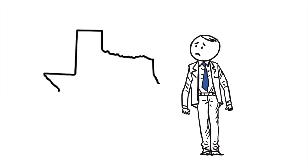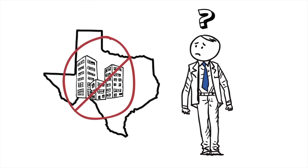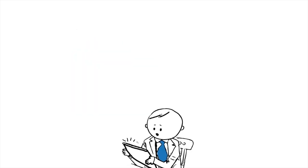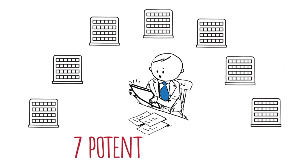Bob finds out his current vendor doesn't provide service in one of the new locations. He doesn't know who operates in Dallas. So Bob researches it for two weeks and finds seven potential vendors. Seven potential vendors, and time is running out.